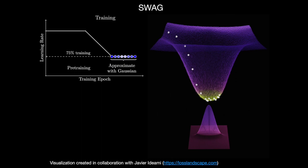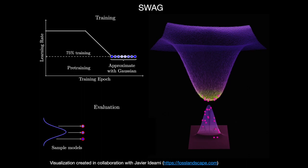SWA solutions are known to generalize better than SGD solutions. For the covariance matrix, we use a low-rank plus diagonal format to keep the computational and memory requirements of the method low. At test time, we perform Bayesian model averaging: we sample models from the SWAG approximation, compute predictions for each model, and average those predictions.